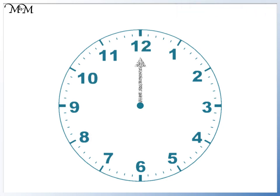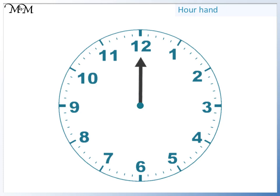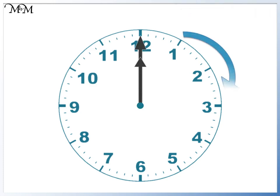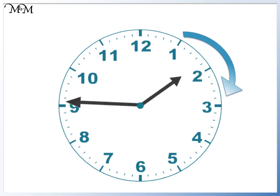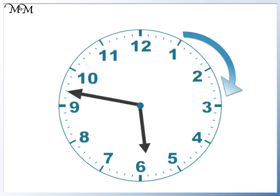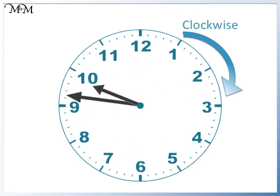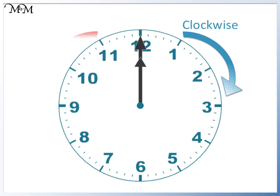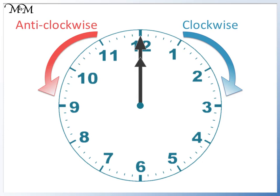This shorter hand is known as the hour hand. It tells us how many hours have passed. The hands move around the clock in this direction. This direction is known as clockwise. The opposite direction is known as anticlockwise.